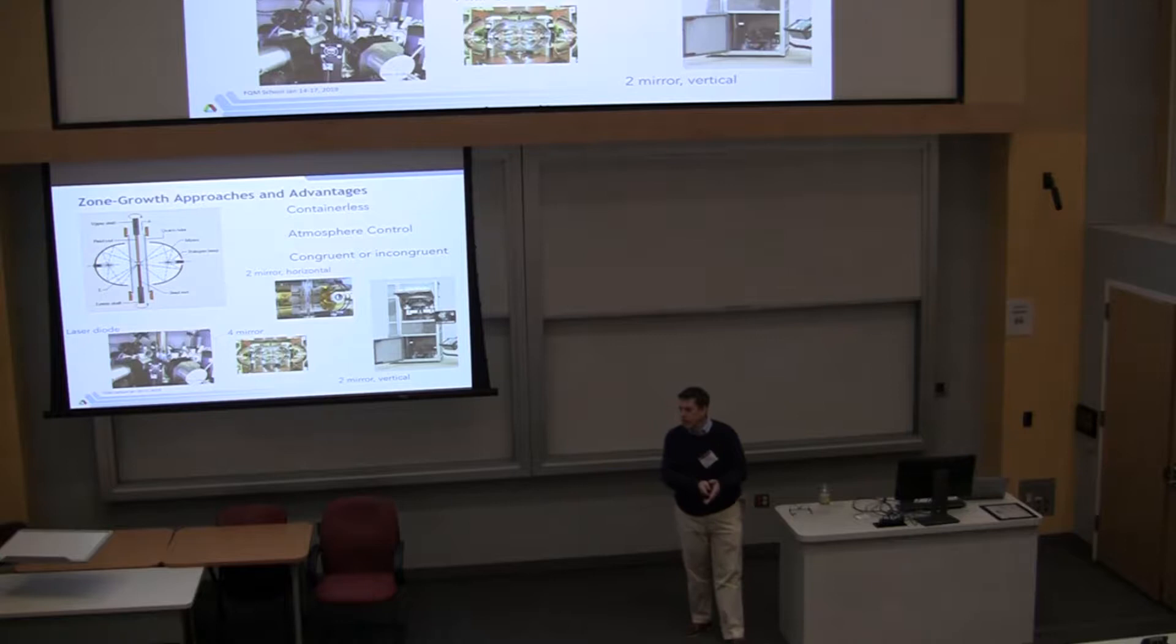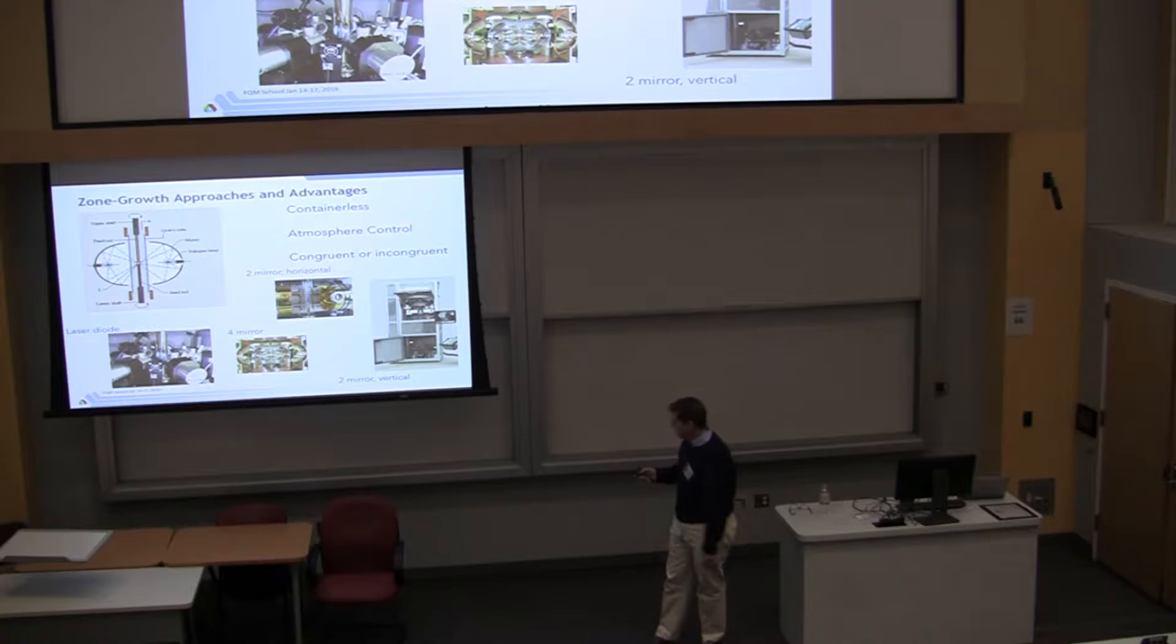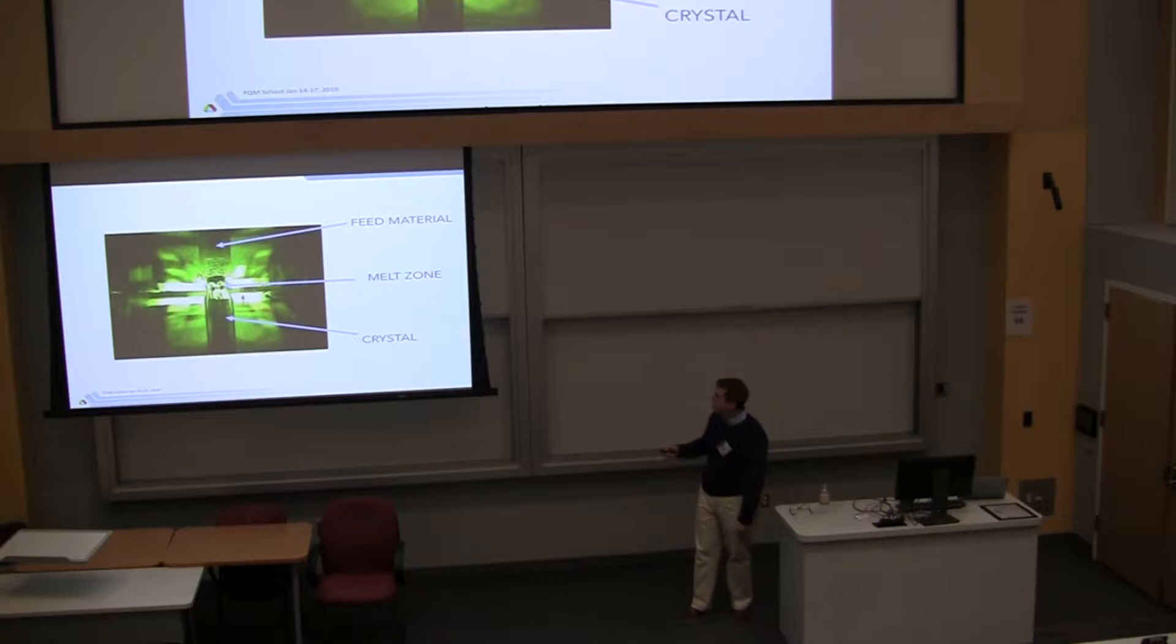So just a little exposition here about the types of floating zone furnaces that are out there. So these are called optical zone furnaces, and they work by focusing the image of a lamp, like a halogen lamp or a xenon lamp or a high power source, using mirrors into a small region that's a few millimeters by a few millimeters. So you get a hot zone and you melt. It's kind of like using a magnifying glass in the sun. That's the principle.